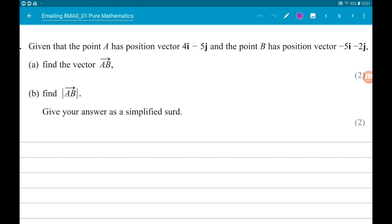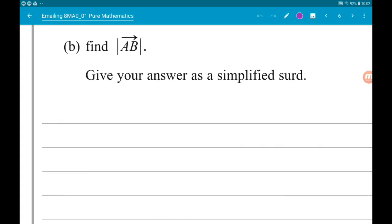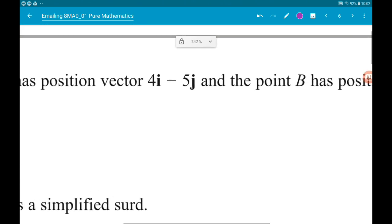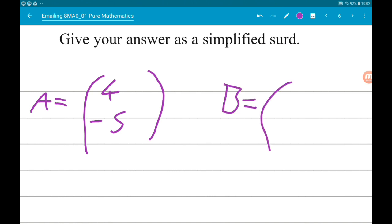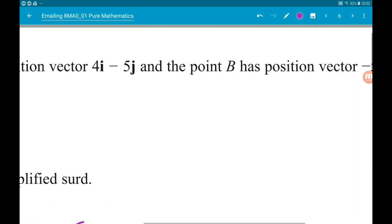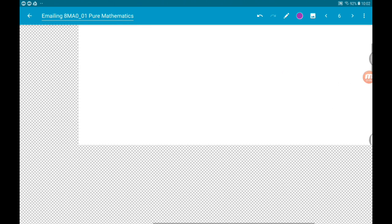So let's write these in Cartesian form without i and j. Remember, i is our horizontal and j is our vertical, so A is going to be (4, -5) and B is going to be (-5, -2).